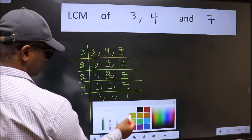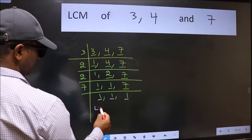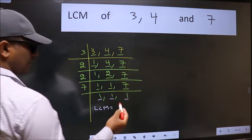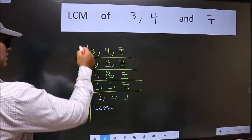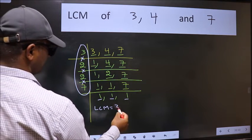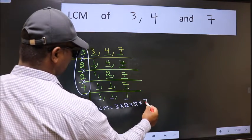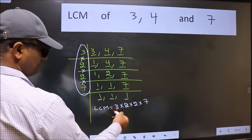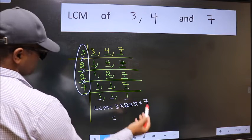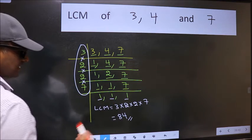So we got 1 in all the 3 places. So our LCM is, LCM is the product of these numbers. That is 3 into 2 into 2 into 7. When we multiply these numbers, we get 84 is our LCM. Here we go.